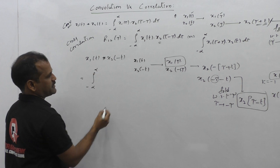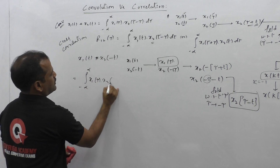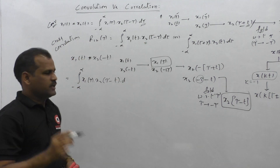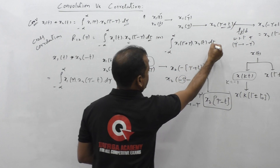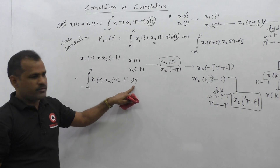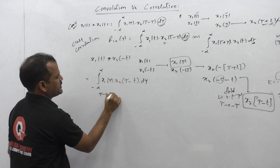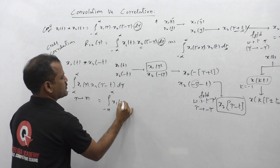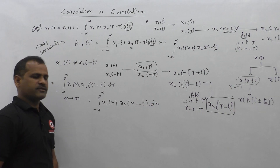So the convolution integral is the integral of x1(tau) * x2(tau - t) d_tau. Note that in the convolution integral the independent variable is tau, so we integrate with respect to d_tau. Now I am replacing tau with a new time domain variable n, so we get x1(n) * x2(n - t) dn.